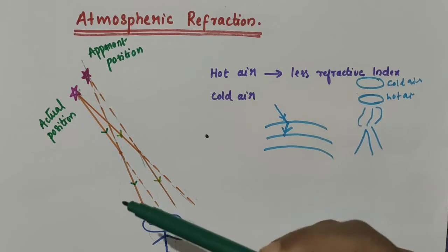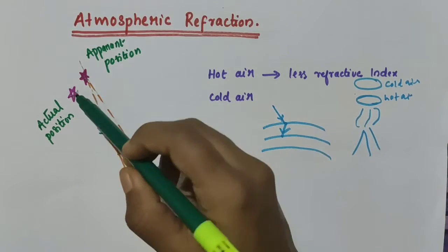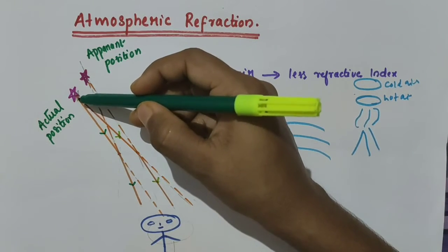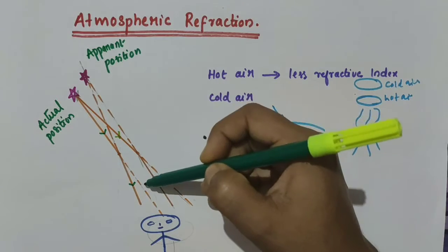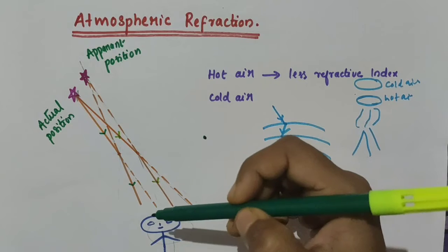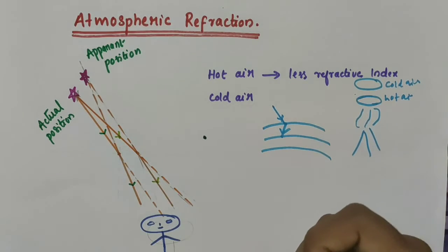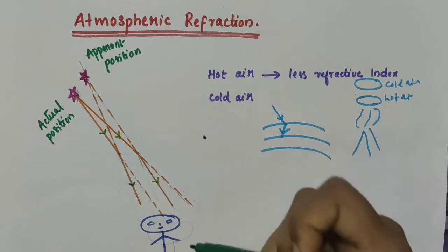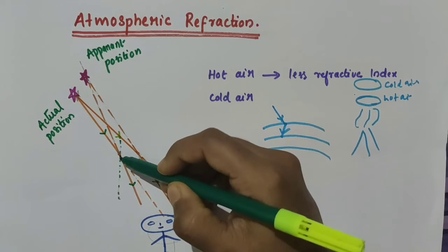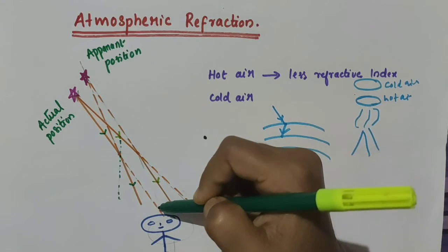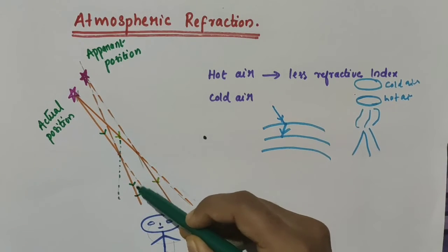The atmosphere bends the starlight towards the normal. The dotted path is the actual straight-line path of the incident starlight. But our atmosphere bends the starlight towards the normal continuously. A second ray of light from the star was supposed to travel along the dotted straight-line path, but it won't follow that particular path because refraction takes place. Due to refraction, it bends towards the normal.